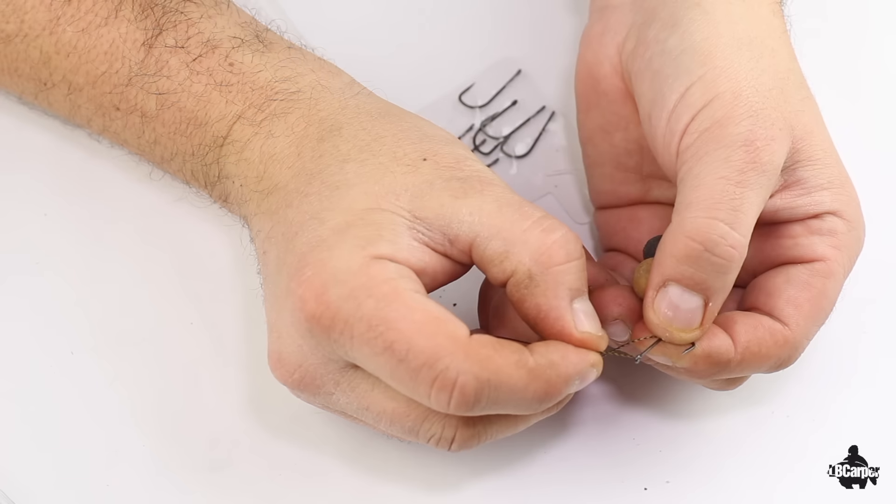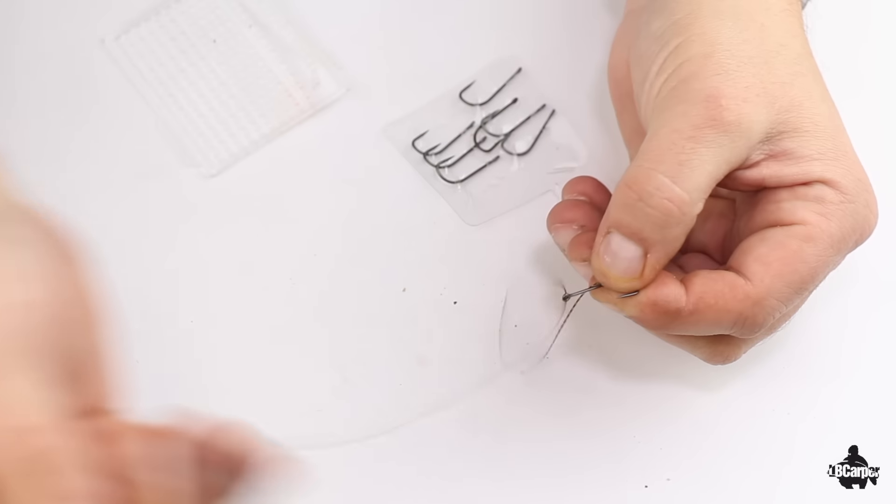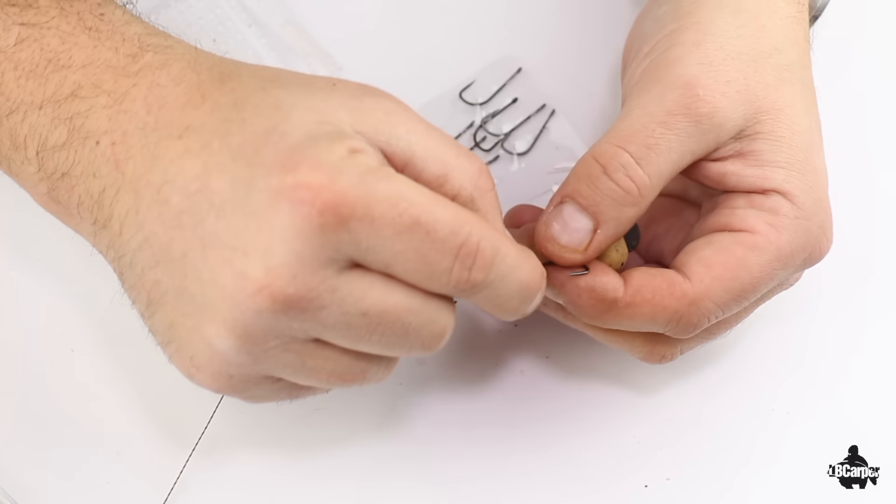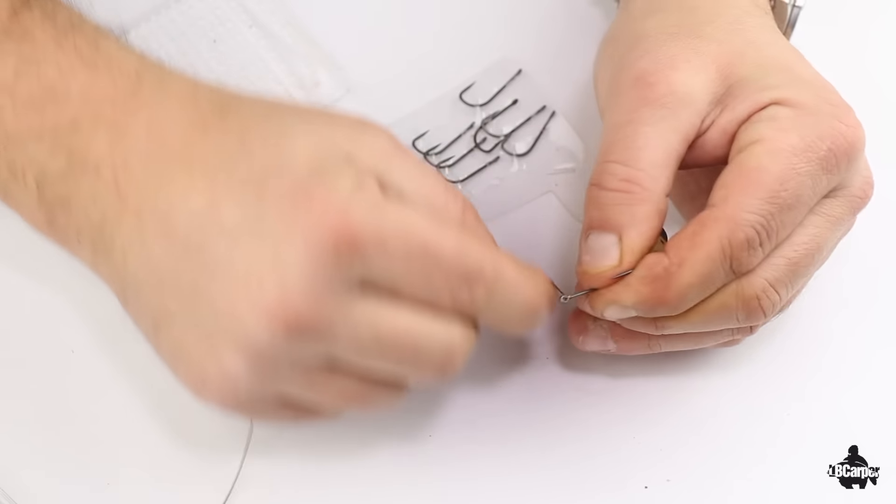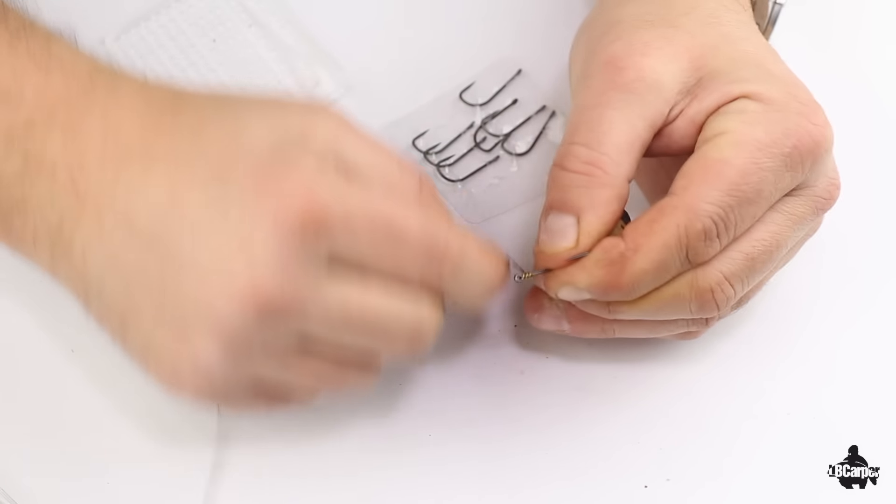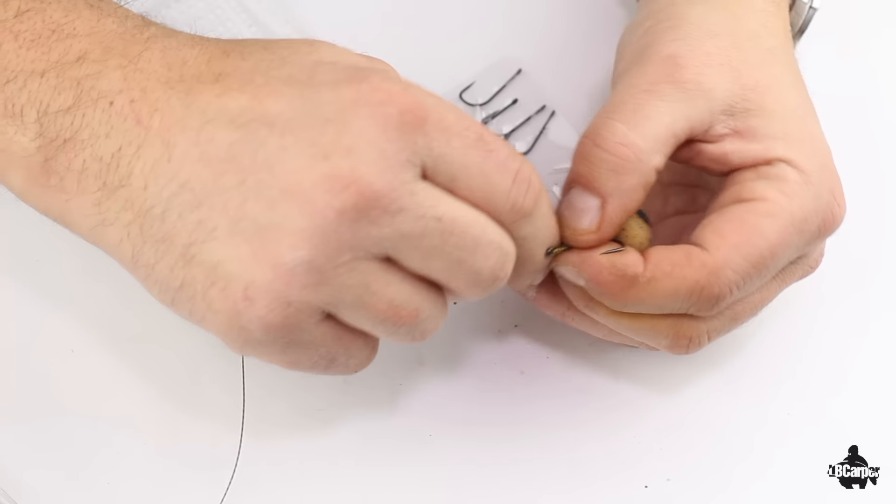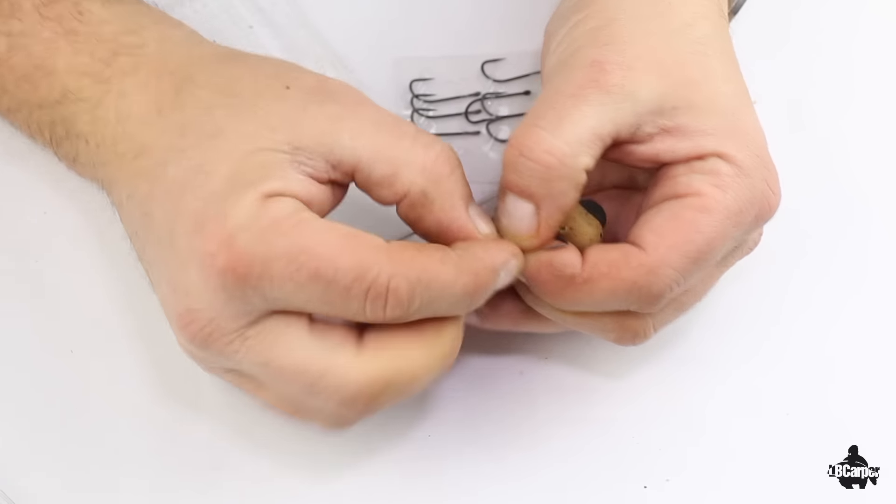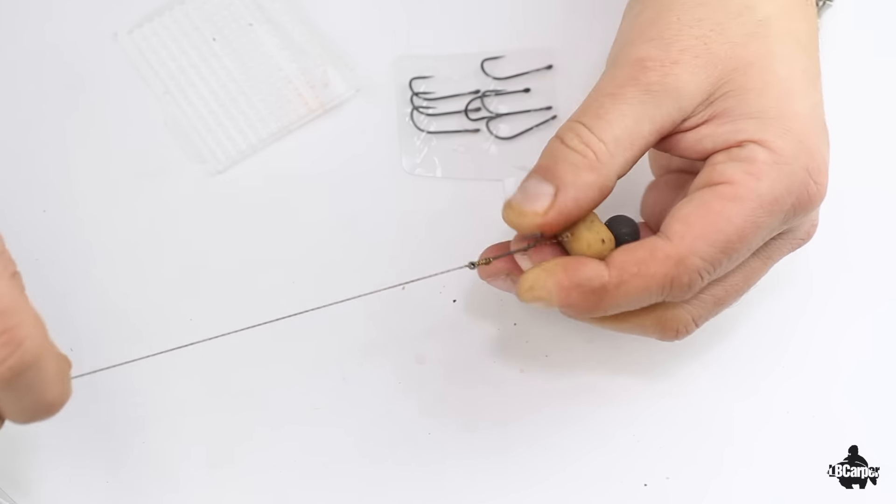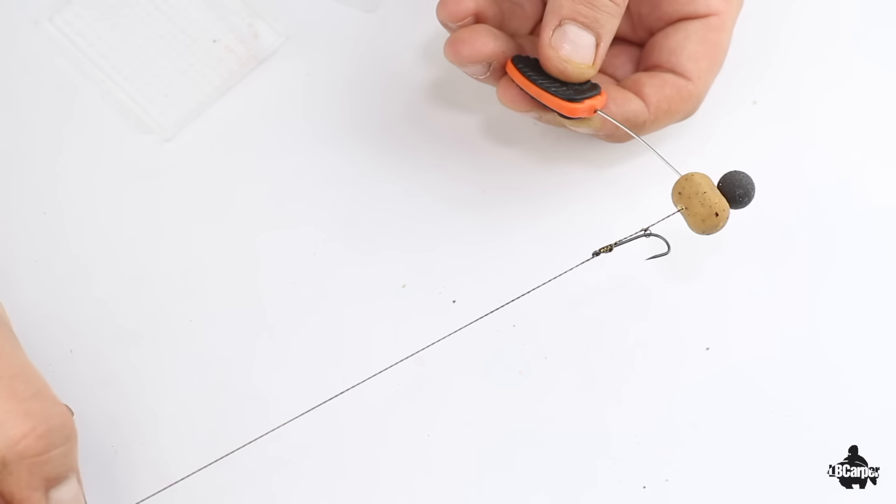Thread the braid through the eye of the hook, pull tight and then we're just going to do a knotless knot. Six, seven, eight times down, whip back pretty high, pull tight. There you go.